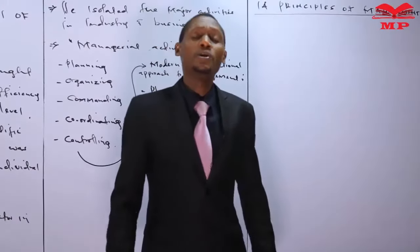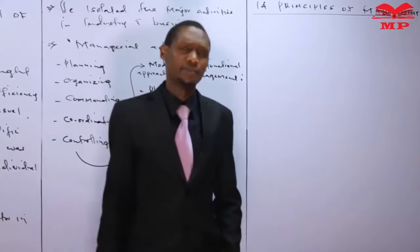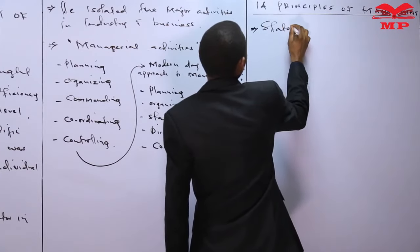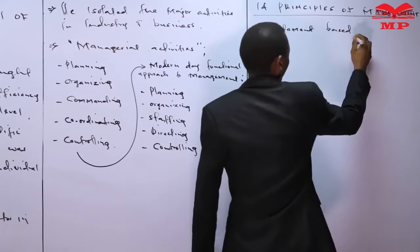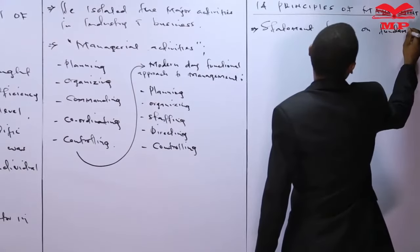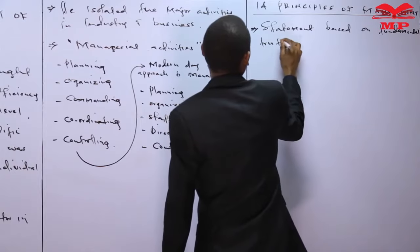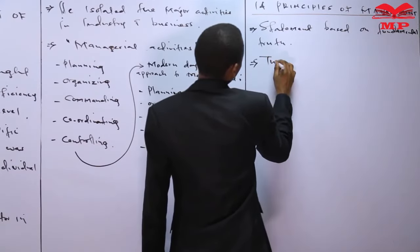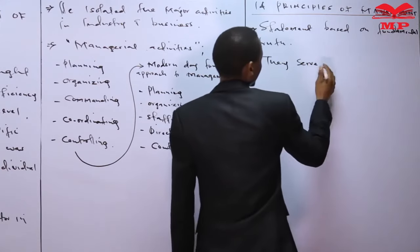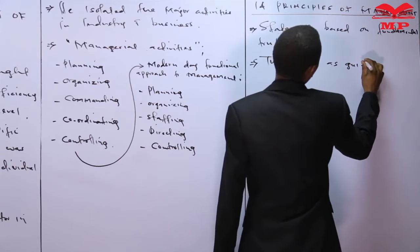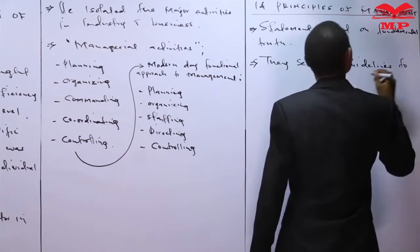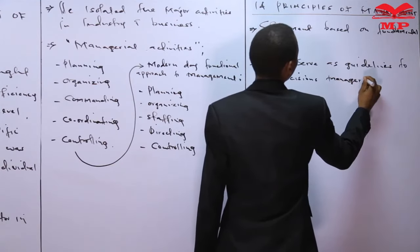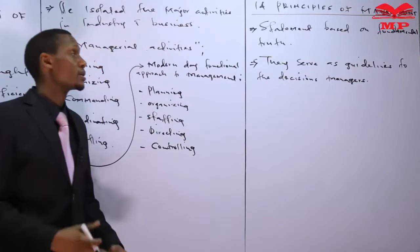The 14 principles of management are important to note because they are applicable even today in modern organizations. The principles are statements based on fundamental truth. These principles are important because they serve as guidelines to the decisions of managers — when a manager is making a decision, that decision is going to be based on the 14 principles.